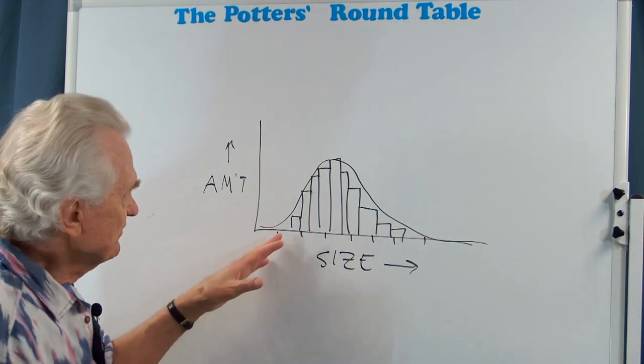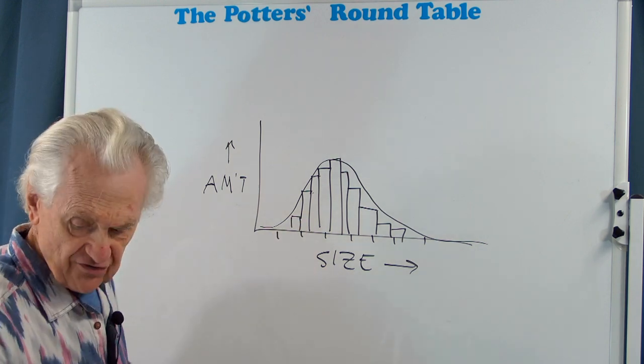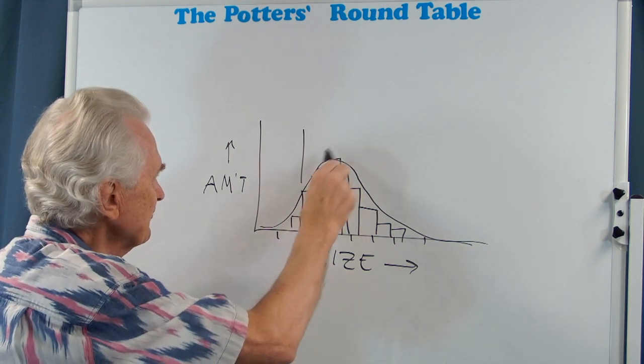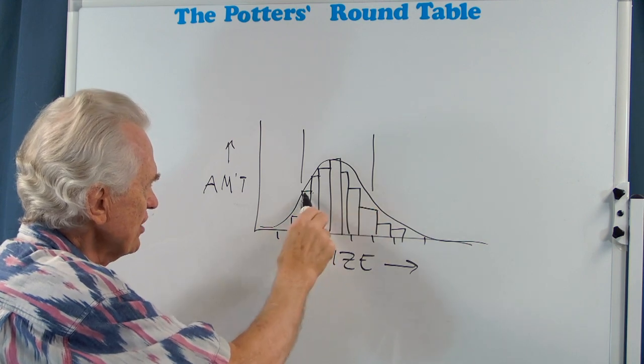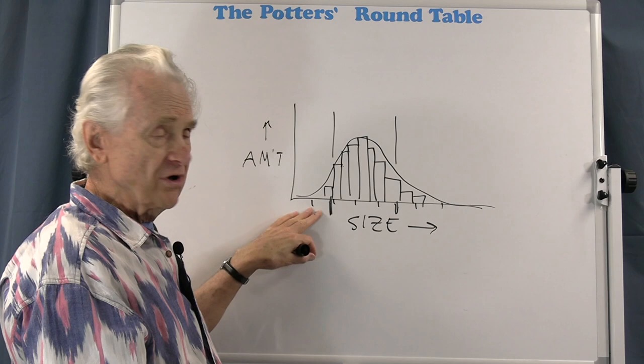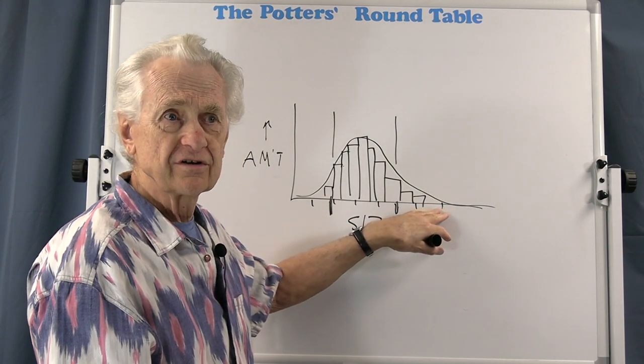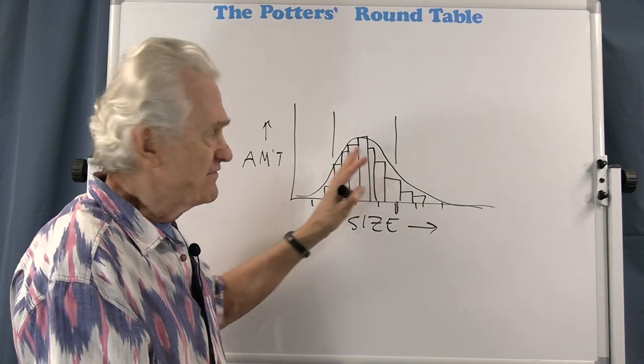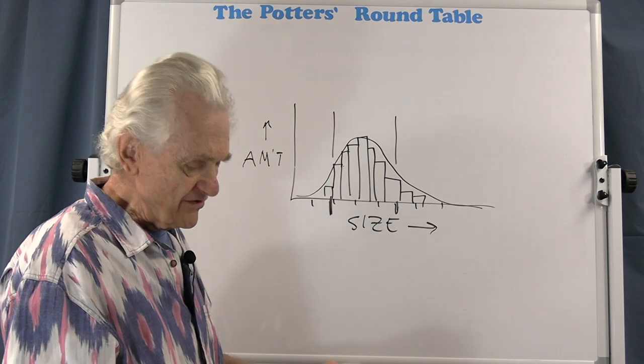So this particular, in this graph, for instance, what this shows is that most of the particles are in roughly, the greatest percentage are from this size to this size, and there are a few that are smaller, and there are some that are larger. So this is a nice way to sort of visualize how much of all the different sizes I have.